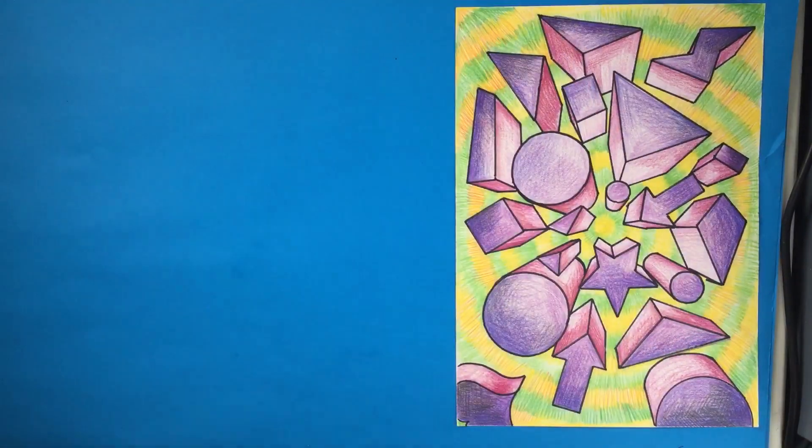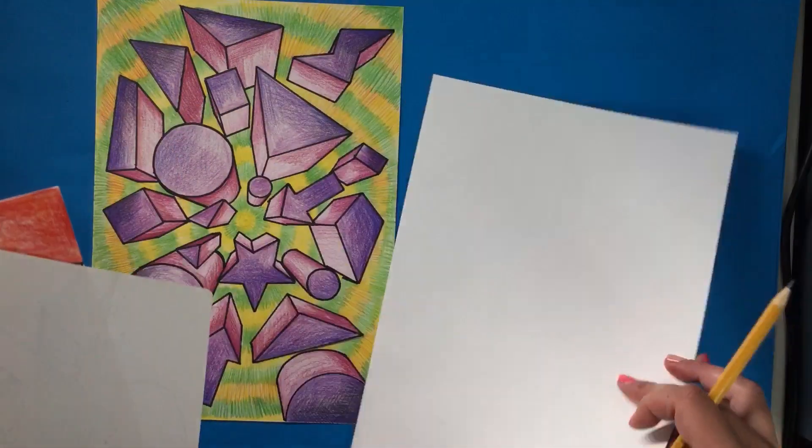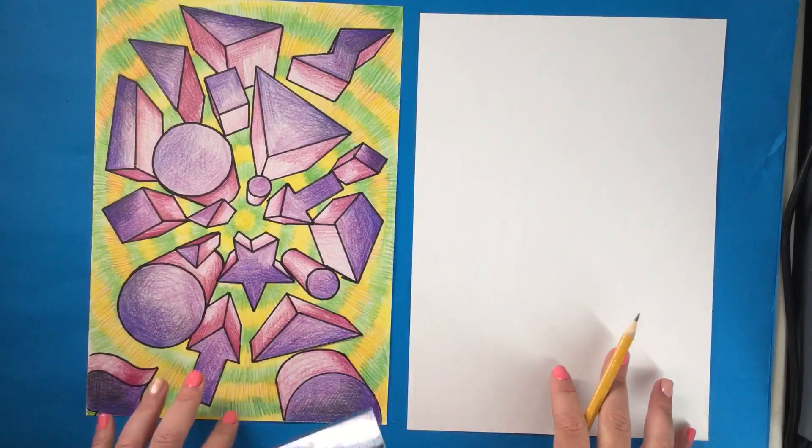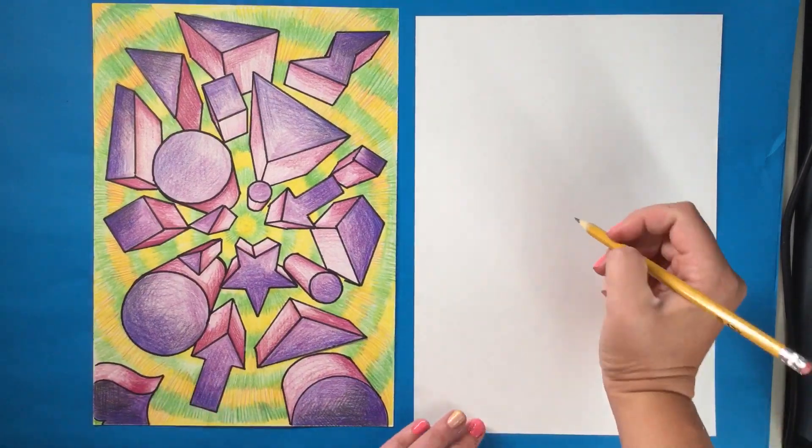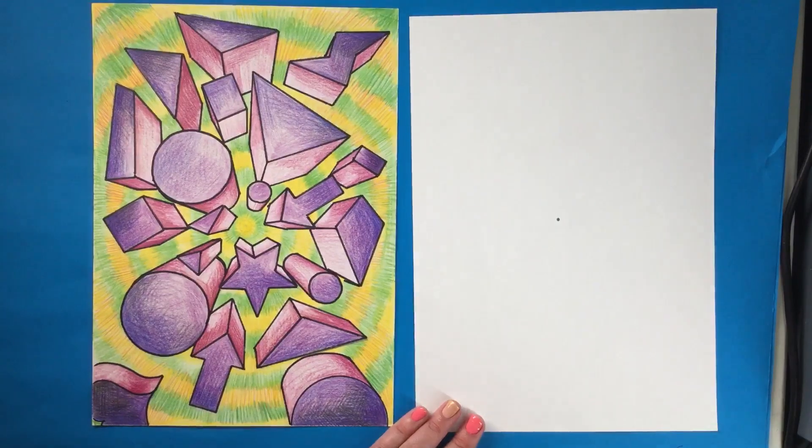So let's get started with what our first steps are with both of these works of art. You're going to need a piece of paper and a ruler or some kind of straight edge, please. And in the center of your paper, draw a dot. This is our one point for our one-point perspective.